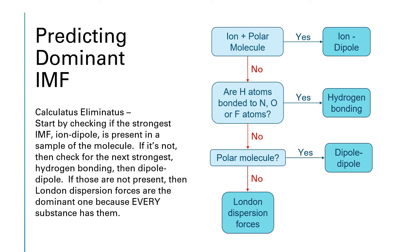The process of identifying the dominant intermolecular force in a compound is basically calculatus eliminatus. We're going to start with whatever the strongest force is and see if that's present in the molecule. If it's not, we'll move to the next strongest force and keep working our way down until we reach London dispersion forces, because regardless of what the substance is, London is always present. It's only the dominant force if all of the stronger forces are missing.